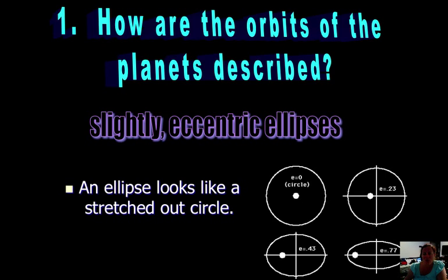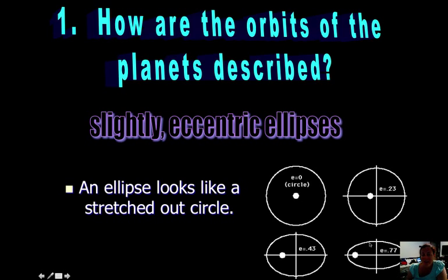So how are orbits of planets described? Orbits are described as slightly eccentric ellipses. So how does an ellipse compare to a circle? If you look at this picture here, this would be a perfect circle, and this would be an ellipse — a little more flattened or oval in shape. When it says slightly eccentric, it's just barely off from a perfect circle. An ellipse looks like a stretched out circle; the more it stretches out, the more oval it gets.